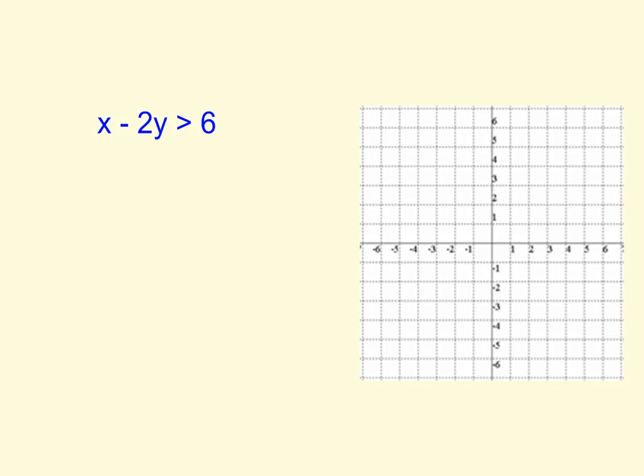All right, so here's our last graphing of an inequality. We have x minus 2y is greater than 6. This is not ready to graph yet because we do not have y alone.